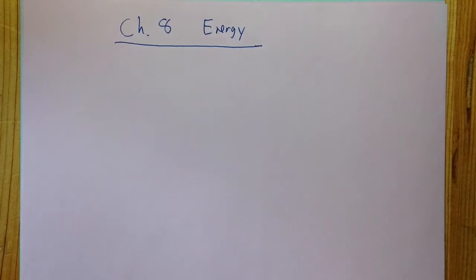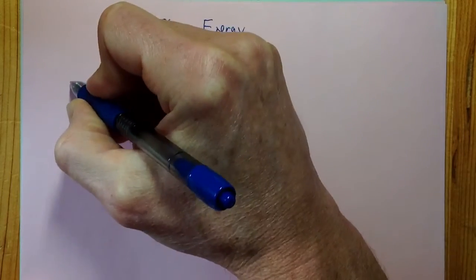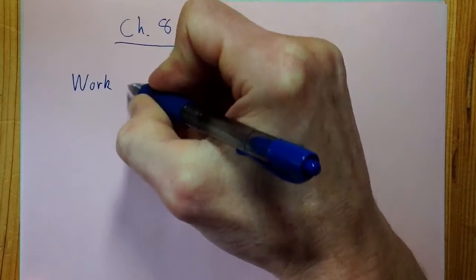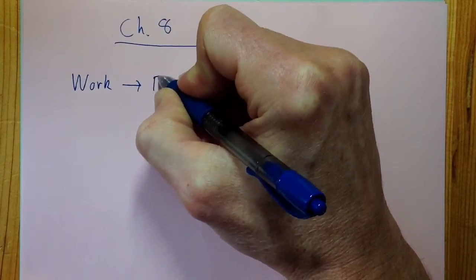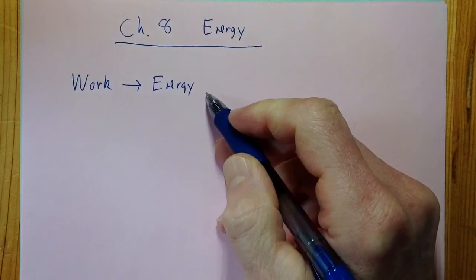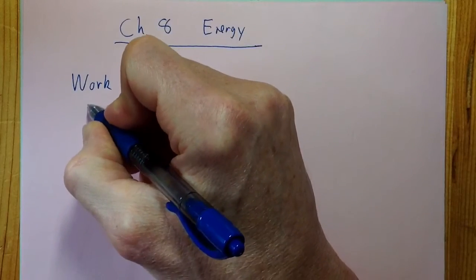All right, in this video I'll talk about the basic ideas of chapter 8, which hopefully will help you understand things and help you with problems. All right, so the chapter's on energy, and one of the main ideas is if you do work, the work you do turns into some type of energy, and there's lots of forms of energy.